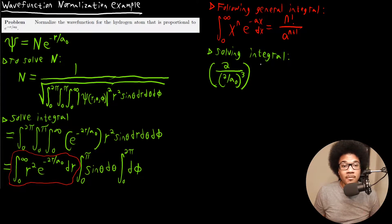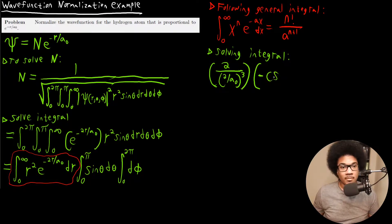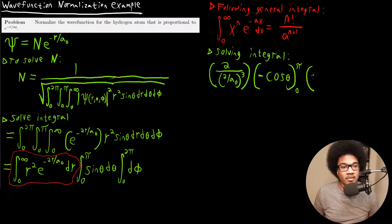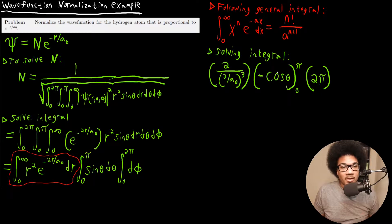The second integral: integrating sin(θ). The integral of sin(θ) is negative cos(θ), evaluated from 0 to π. Plugging in π: cosine of π is negative 1, so negative times negative 1 gives positive 1. Plugging in 0: cosine of 0 is 1, so negative cosine of 0 is negative 1. That gives 1 minus (negative 1) equals 2. And the phi integral from 0 to 2π is just 2π.